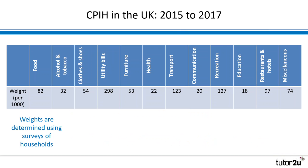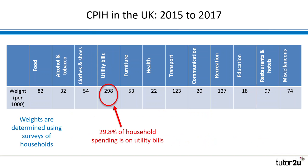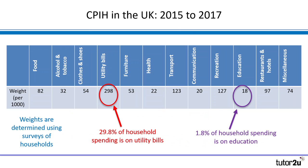What they look at is the weighting of those different categories in our overall spending. For example, utility bills — highlighted there — show a weighting of 298 parts per 1,000, meaning that out of each £1,000 we spend, £298 goes on utility bills, or 29.8% of household spending. To take another example, education: 1.8% of household spending, or £18 in each £1,000, goes on education. That's how the weights are determined.